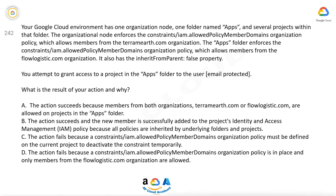Question number 242. Your Google Cloud environment has one organization node, one folder named Apps, and several projects within that folder. The organizational node enforces the constraints/iam.allowed-policy-member-domains organization policy, which allows members from the teramearth.com organization. The Apps folder enforces the same constraints/iam.allowed-policy-member-domains organization policy, which allows members from the flowlogistic.com organization. It also has the inherit-from-parent: false property.